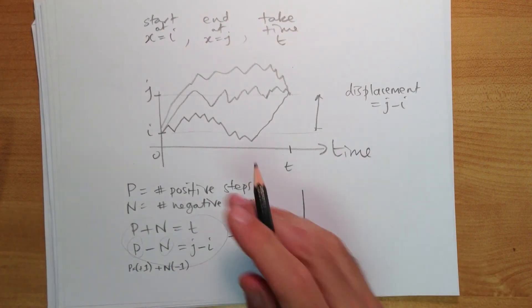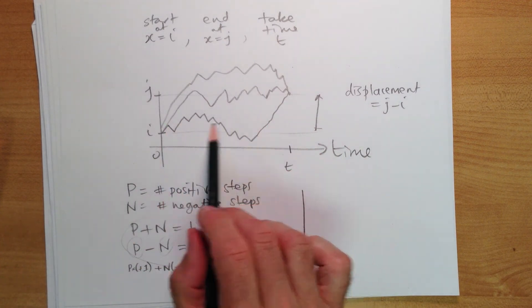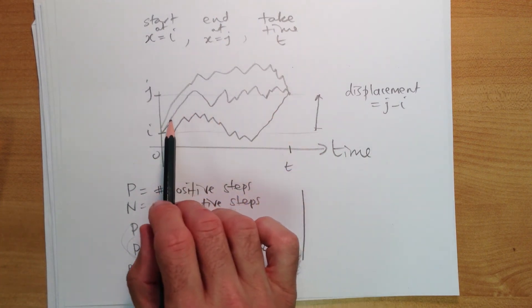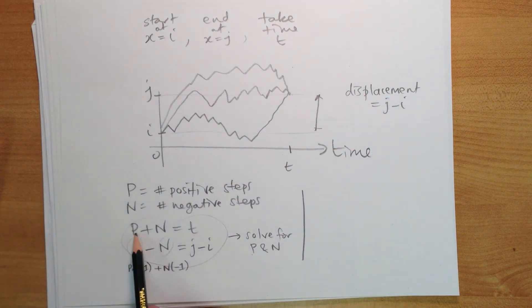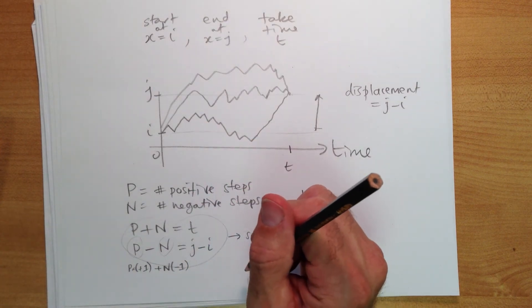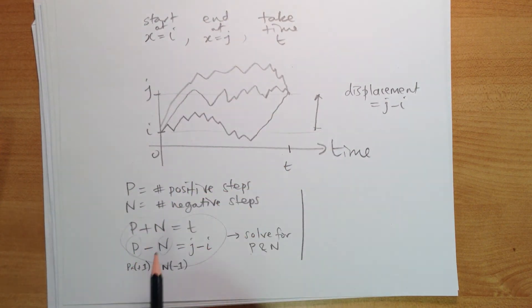The realization is that we can arrange those positive or negative steps in any way we like. You have to have p positive steps to get there, which you solve for here. Let's say that's some number we figured out.